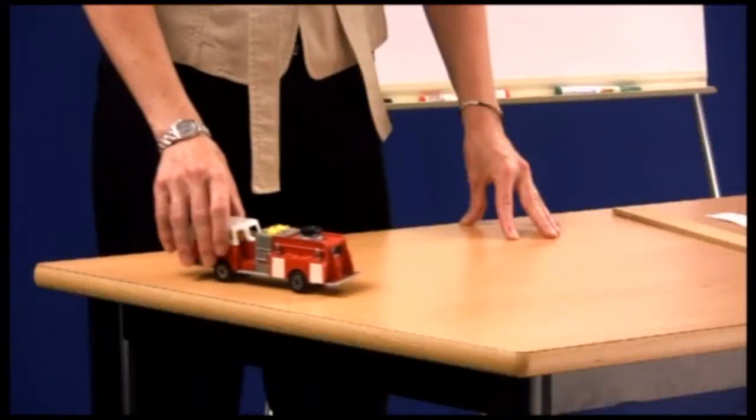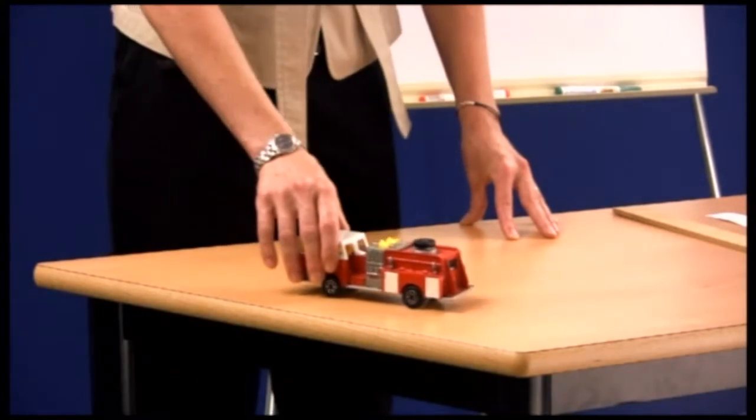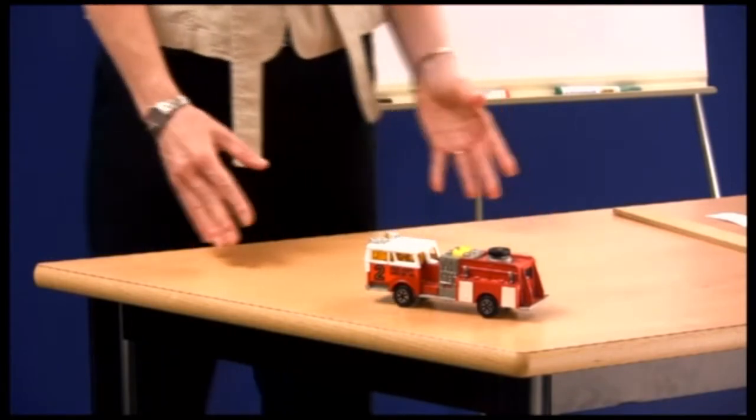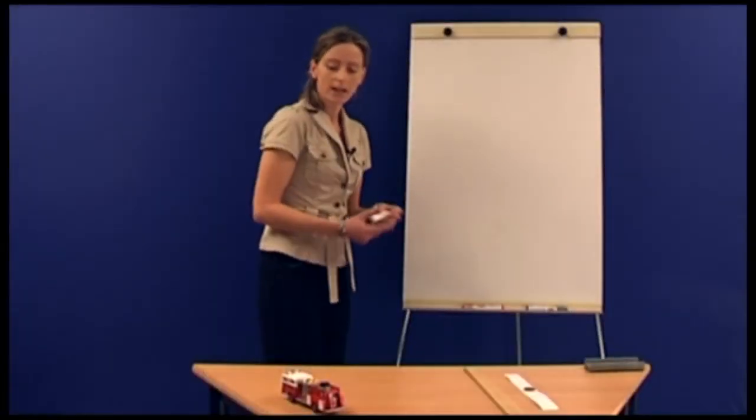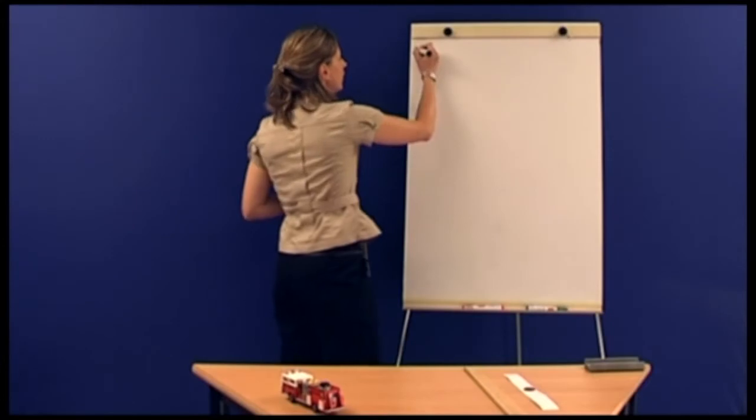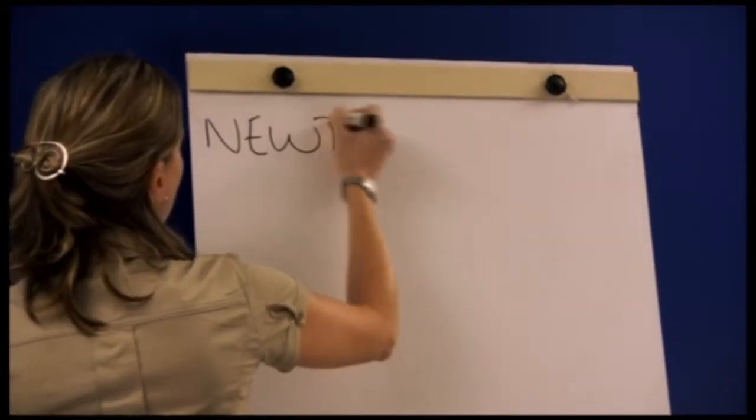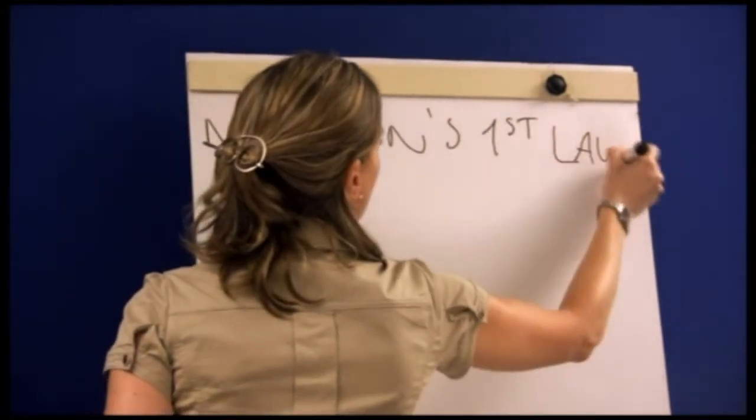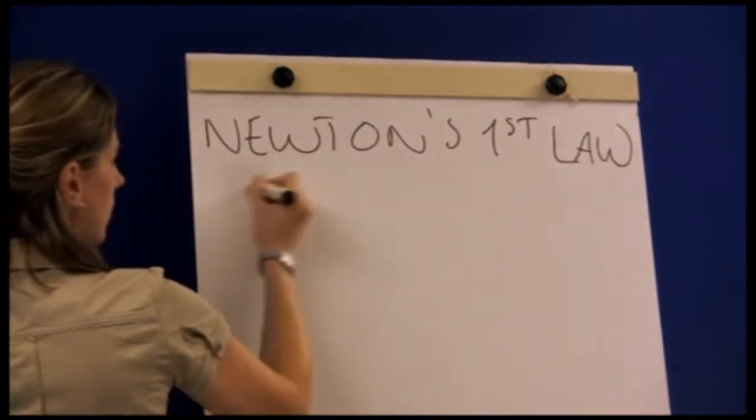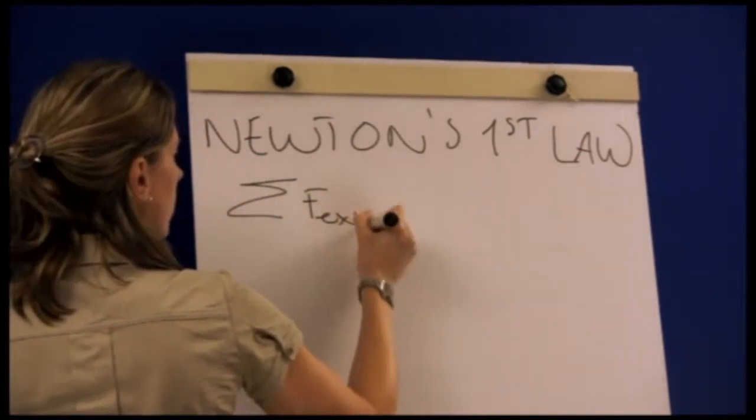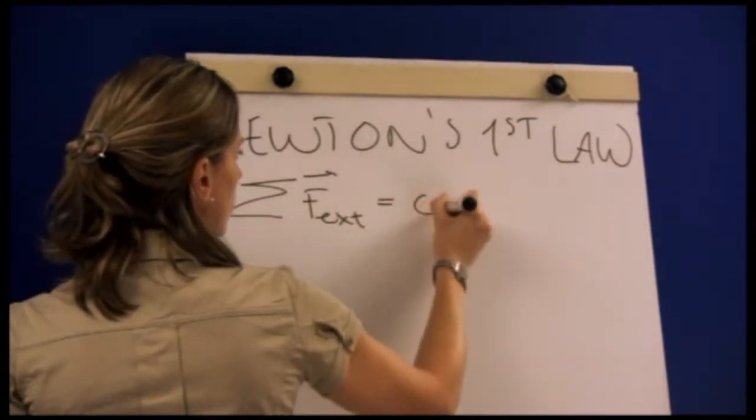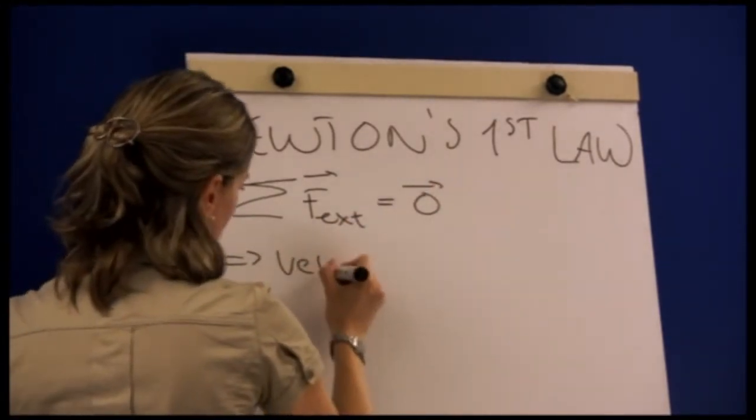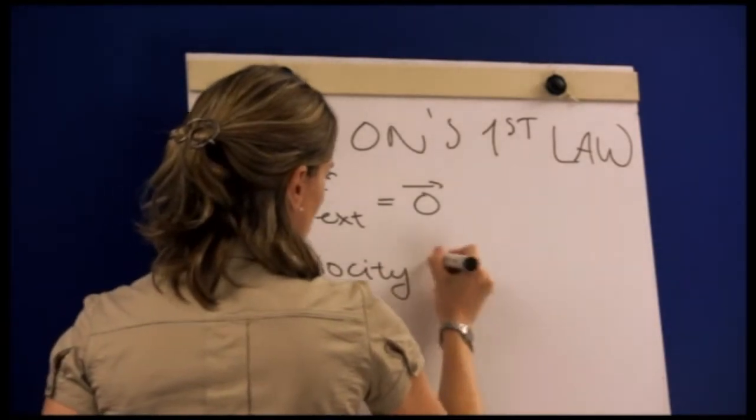So when I'm pushing this along, I'm actually just making the sum of forces equal to zero, such that it moves along at a constant velocity. So let's write this down. Newton's first law says the sum of external forces equal to zero, that means that the velocity is constant.